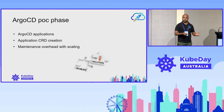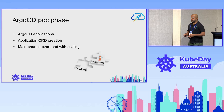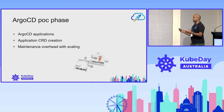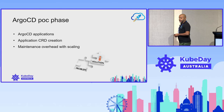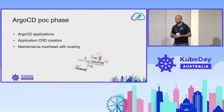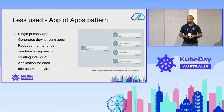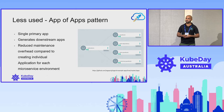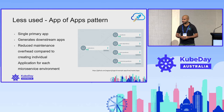During the POC phase, we started off with Argo CD applications — just creating plain Argo CD application CRDs. We found that it's not really maintainable. There's too much maintenance overhead in scaling it to 20 or 50 applications.